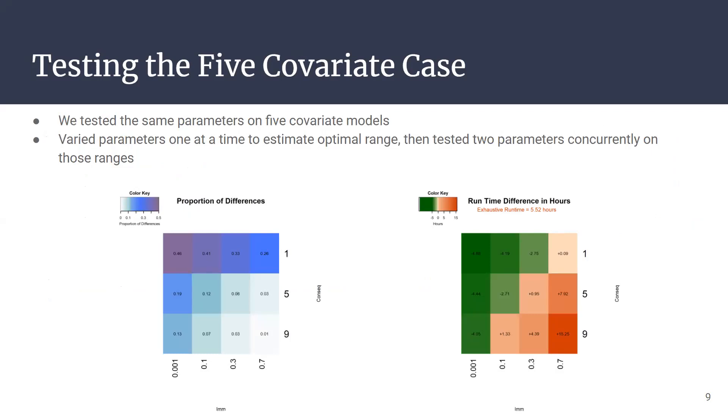We tested the same parameters on five covariate models. We wanted to test five covariate models because we wanted to see if our results will scale with the size of the model. First we did the same thing as in the four covariate case: we varied parameters one at a time to estimate optimal range.